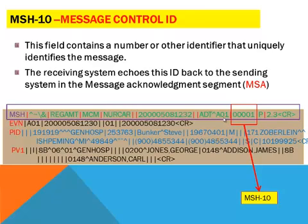Why do we need this? Because we want to send an application to send one message to another application. From the other side, they need to refer to the same message. They can use this message control ID to confirm they are dealing with the same message. Generally, when one site receives the message from another site, they will send a message acknowledgement segment back to the other site.